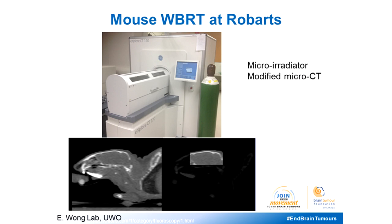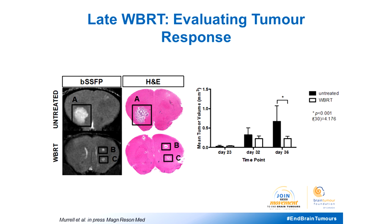We're using a micro-irradiator — a modified micro-CT system developed at Robarts by Eugene Wong's group. For late WBRT results evaluating tumor response: in untreated mice there is a large, bright tumor, while WBRT-treated mice show only small tumors. Measurements of brain tumor volume show a significant difference at the endpoint on day 36, with many more and larger tumors in untreated animals. This confirms that in our model systems we can reduce tumor growth with whole brain radiotherapy.